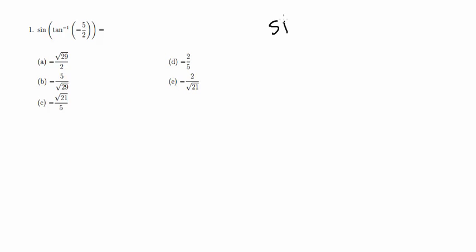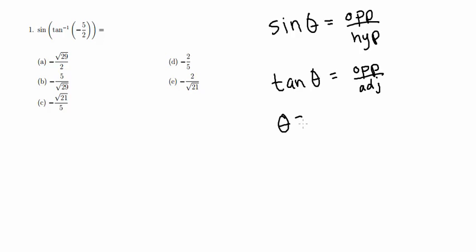I know that the sine of theta is equal to the opposite over the hypotenuse and I also know that the tangent of theta is equal to the opposite over the adjacent. And even taking that one step further, I know that theta is equal to the inverse tangent of the opposite over the adjacent.